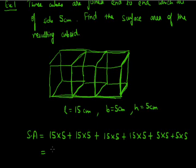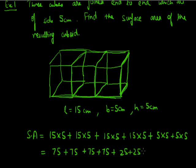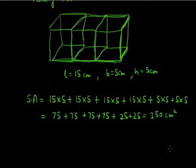Solving: 15×5 = 75, and 75 appears four times (front, back, top, bottom). Then 5×5 = 25 appears twice for the side faces. Adding all: 4×75 + 2×25 = 300 + 50 = 350 cm². So the surface area of the resulting cuboid formed when three cubes are joined end to end, each of side 5 cm, is 350 cm².